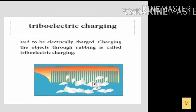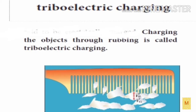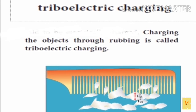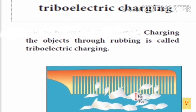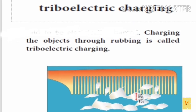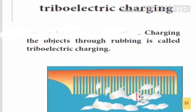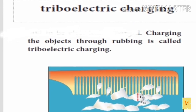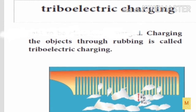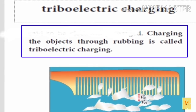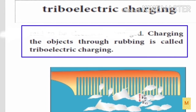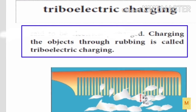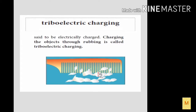First one is triboelectric charging. What is meant by triboelectric charging? When two objects come into contact with each other, they will become electrically charged. Which means that charging the objects through rubbing is called triboelectric charging.